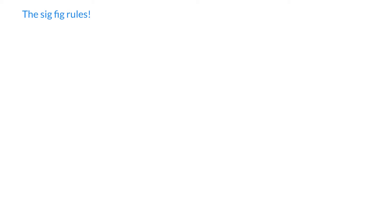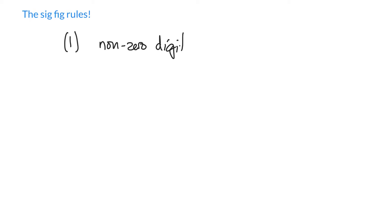Before, we said significant figures was the number of certain digits plus one. But if you are given a measurement, you have to be able to determine and count the number of significant figures to apply these rules. We are going to go through four rules, with a couple of extra ones later on. Rule one: any digit that is non-zero is significant. Non-zero digits are always significant.